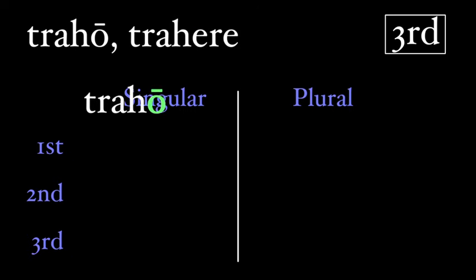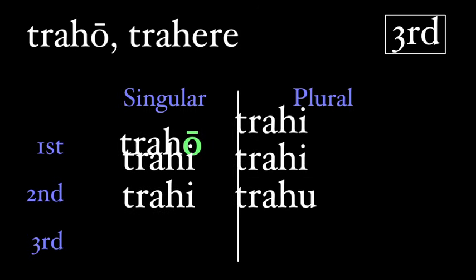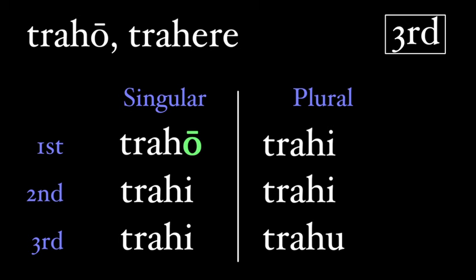We will bring down our first principal part, traho. Then our present stem, traho, but this short e changes to an i for most of the forms of the verb. Trahis, trahit, trahimus, trahetis. And finally, for the last, third person plural, they form, we have a u, trahunt.